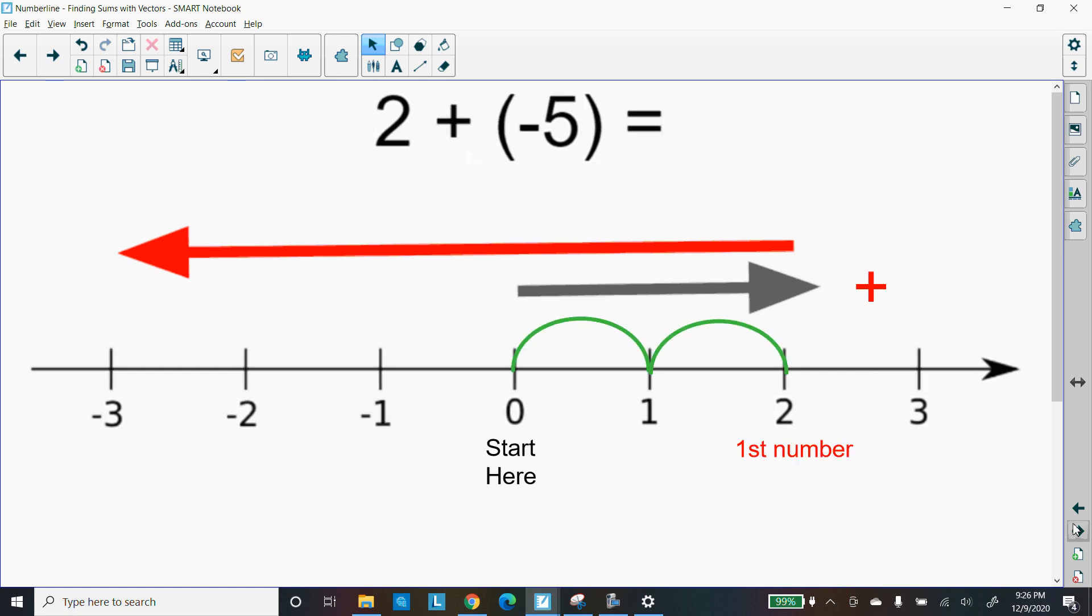So we're going to count the spaces from 0 to the end of that arrow. So let's count it, starting at 0, 1, 2. So it's going in the positive direction, so it's going to be positive 2. That's where the 2 comes from. So that's our first number, the 2, at the end of the first vector.